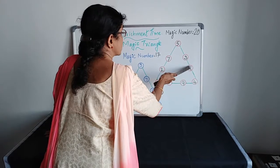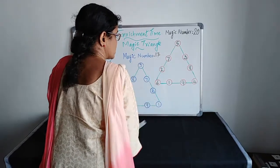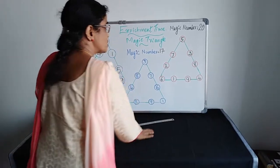Third side. 4 plus 8, 12. 12 plus 3, 15. 15 plus 5, 20. Here, on each side is equal to 20.